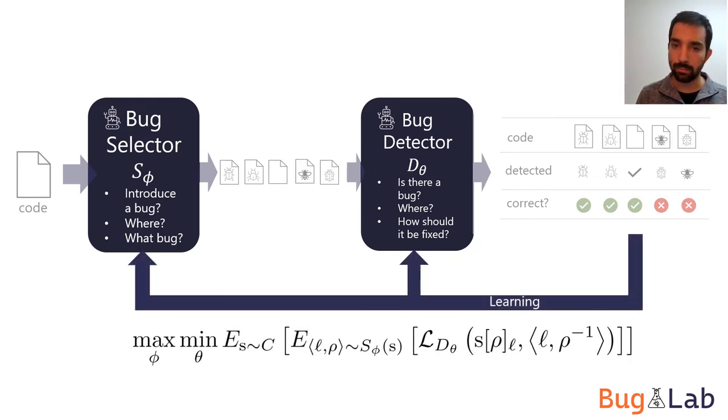How does learning happen? There are many potential options here, but we opt for a max-min objective. The selector needs to introduce bugs that are hard for the detector.